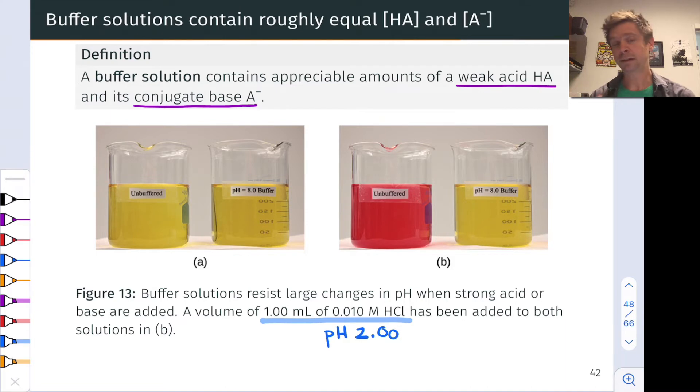To get to B, we add one milliliter of 0.010 molar hydrochloric acid. This solution has a pH approximately equal to 2, so this is quite a bit of hydronium ion and would be expected to lower the pH considerably. In fact, that's exactly what happens in the unbuffered solution. The pH here is low, and the pH indicator turning red tells us we're at a low pH.